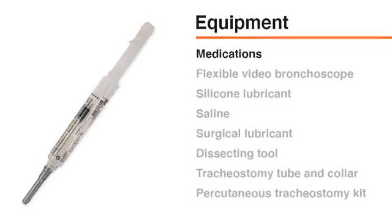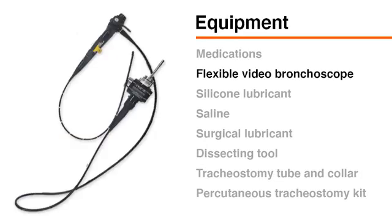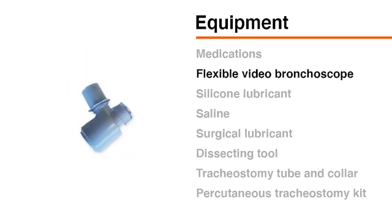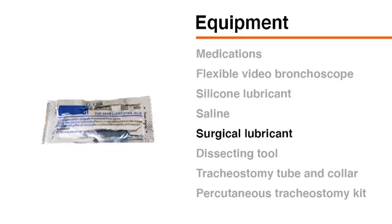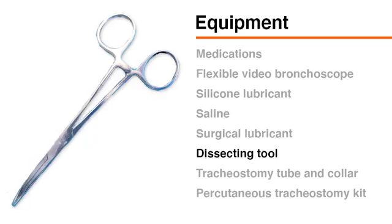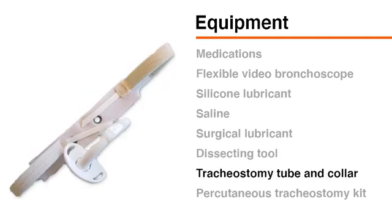To perform a bedside tracheostomy, you will need medications for sedation and paralysis, a flexible bronchoscope — preferably a video bronchoscope since it allows all personnel in the room to visualize the positioning of the oral endotracheal tube — a bronchoscope attachment for the ventilator, silicone lubricant to allow the bronchoscope to pass easily down the oral endotracheal tube, saline, surgical lubricant, a dissecting tool such as tonsil forceps or curved hemostat, and a tracheostomy tube and tracheostomy collar.